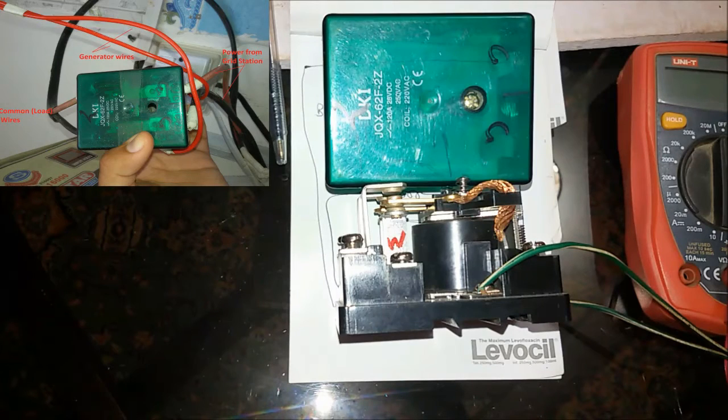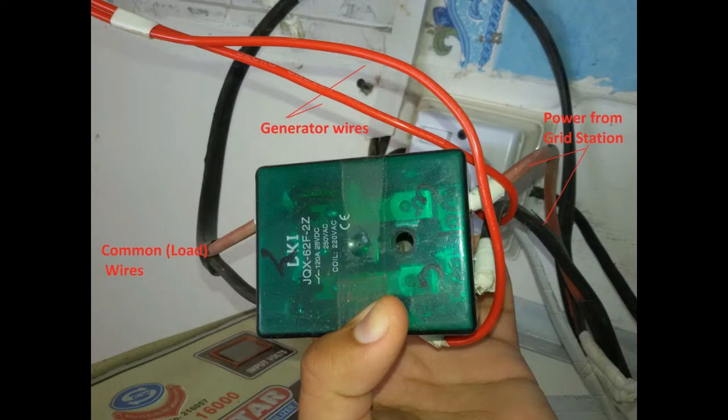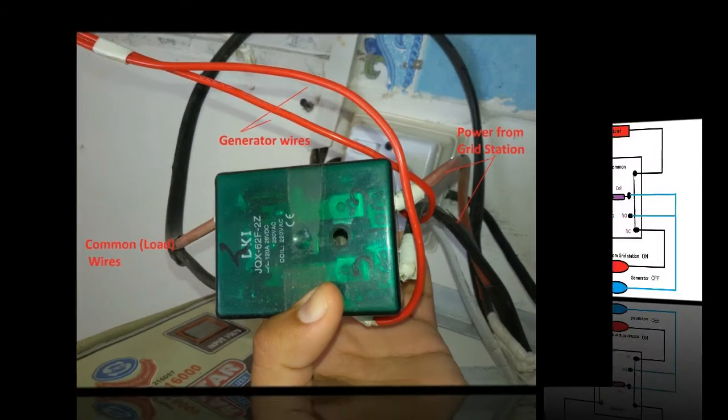Also connect the coil terminal to the generator. After that connect the grid station power to the normally closed terminals of the relay. Now your relay is successfully connected.